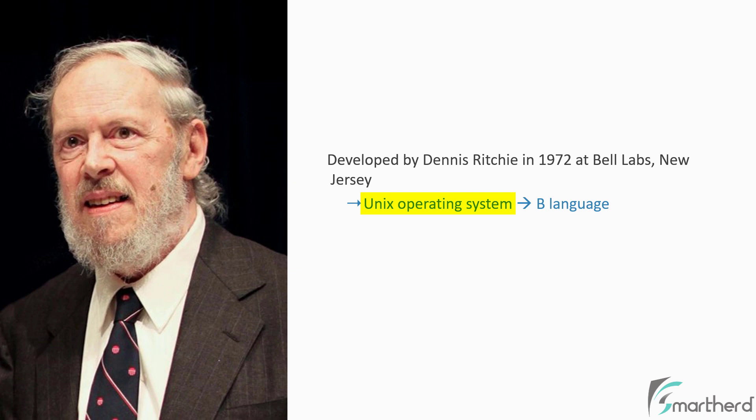Now, what is the Unix operating system? Well, today we have Windows operating system and Macintosh operating system. Similarly, in the 1970s, they had the Unix operating system. And most of the components of this Unix operating system were written in B programming language, which is a programming language that existed before C.